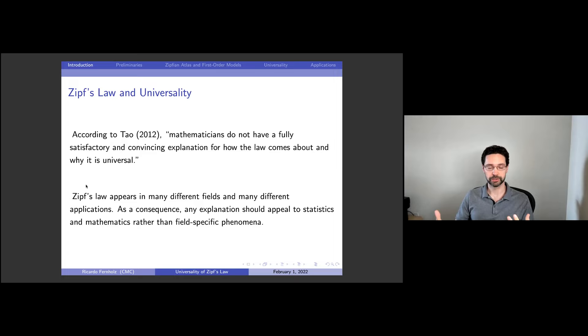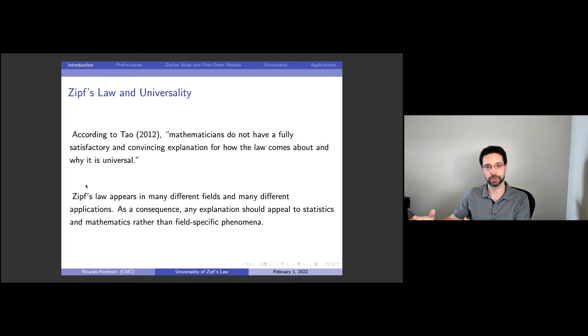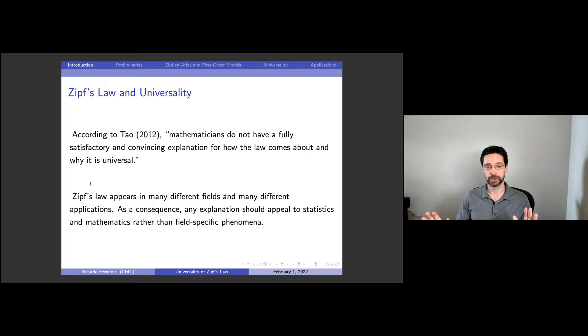Because Zipf's law is universal — we see it in economics, demography, and linguistics — you don't want a field-specific explanation. It doesn't make sense to have an economic model for firm size, a demographic model for city size, and a linguistic model for word frequency, and then get the same distribution in three fields by coincidence. I am intentionally going to lay out a mathematical statistical theory that is general and not based on an economic model of equilibrium or optimization. Think of it like the central limit theorem — another form of universality — which we don't explain separately for biology and physics.